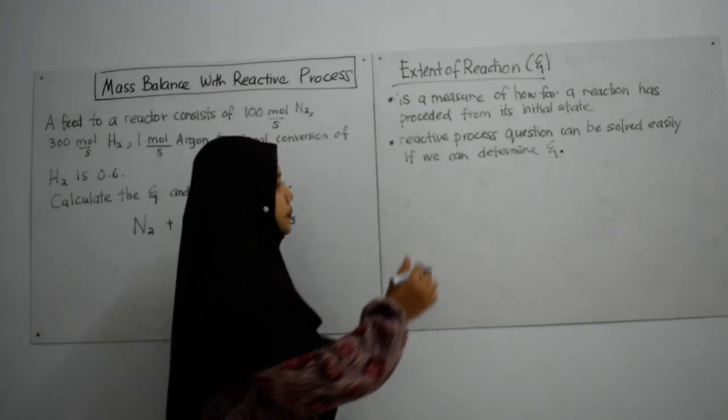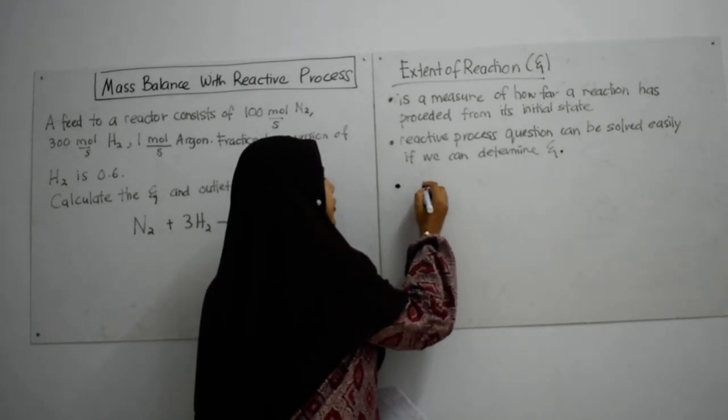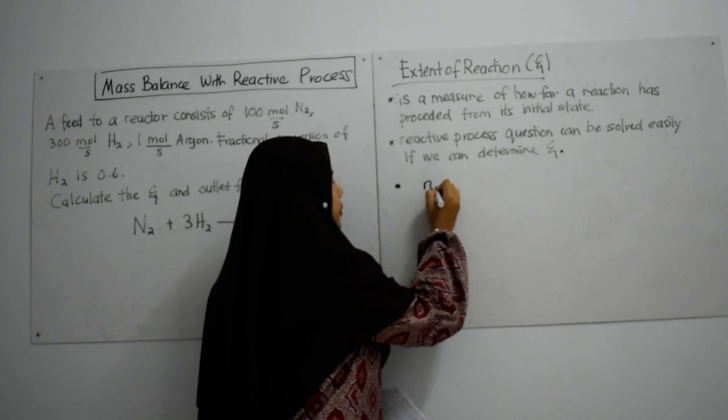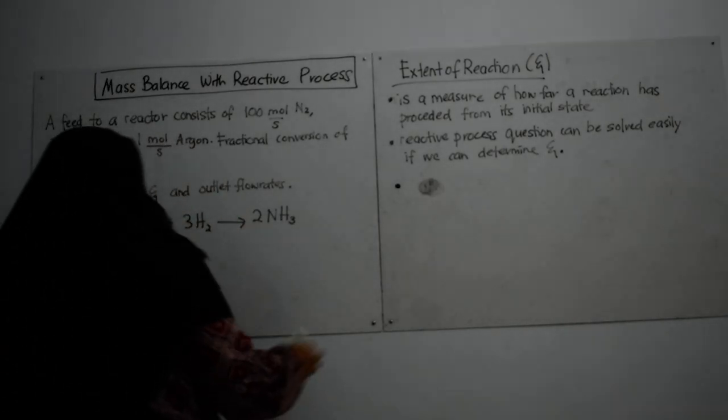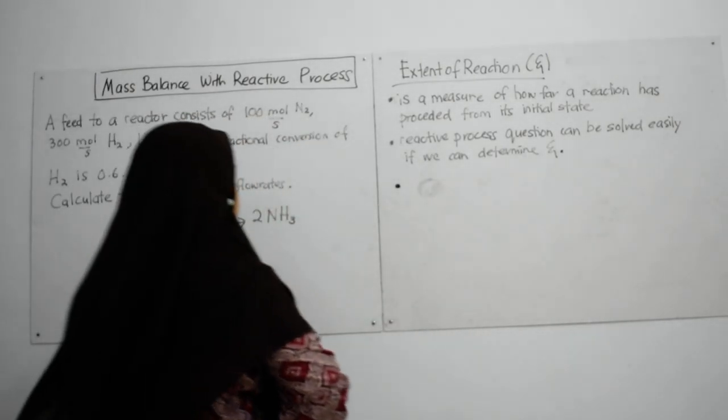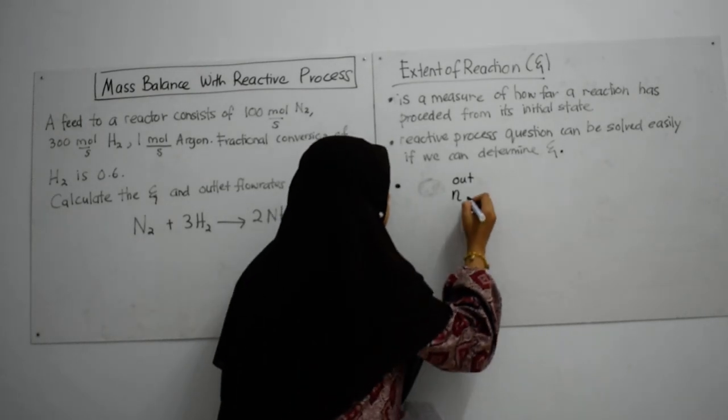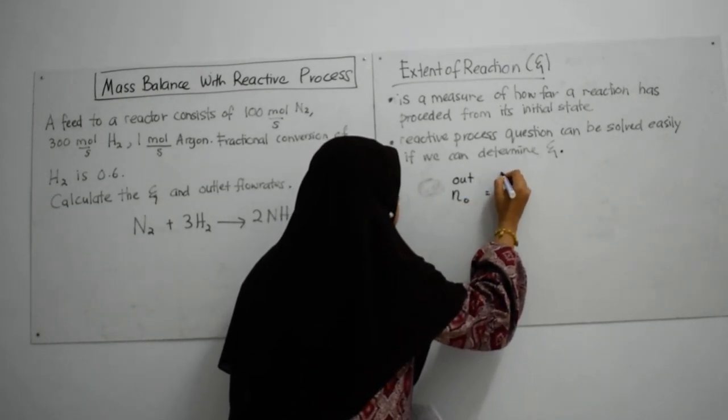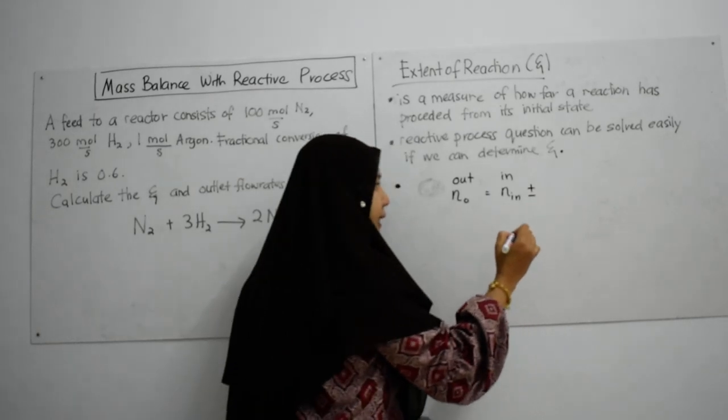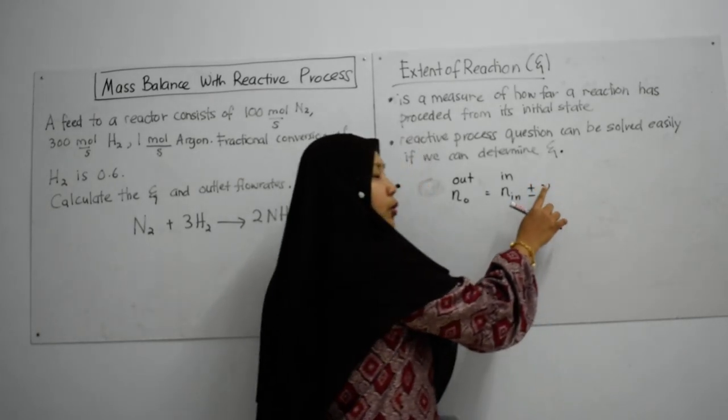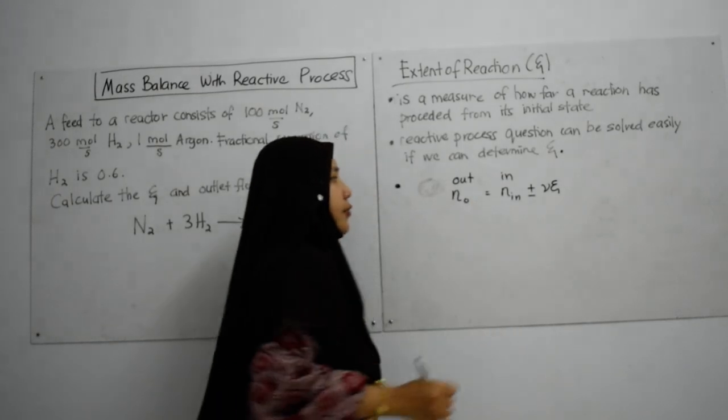Extent of reaction is like this. The basic equation for extent of reaction is n out k equal to n in plus or minus νk·ξ. νk is your stoichiometric coefficient and ξ is extent of reaction.